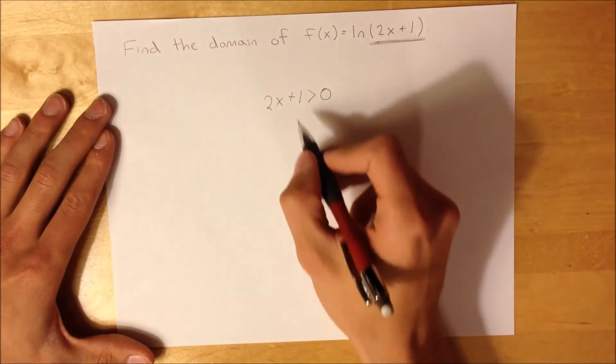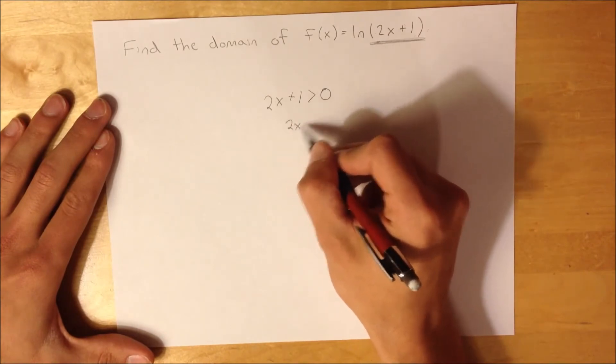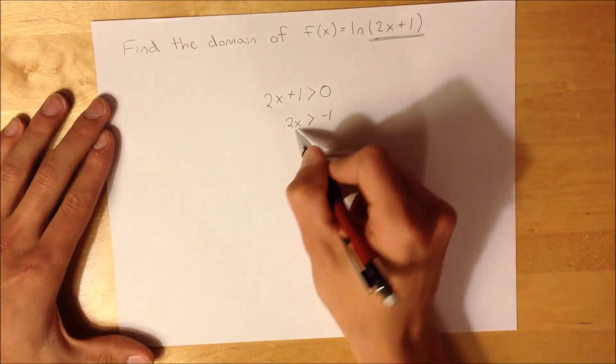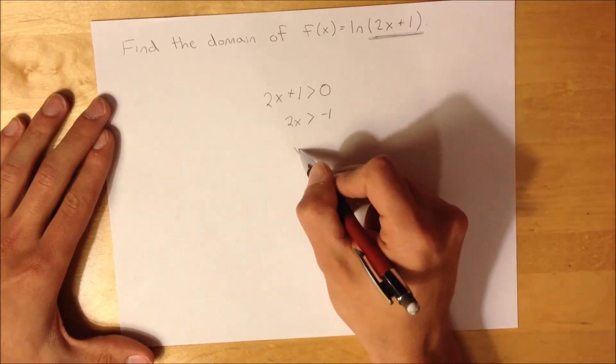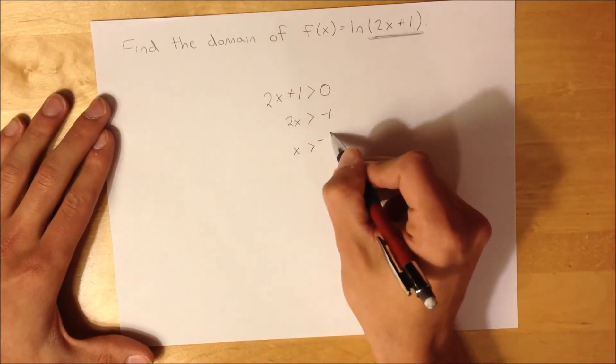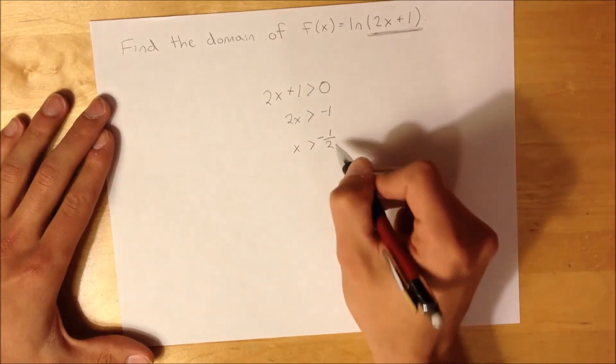So then you just solve for x, and you get 2x is greater than negative 1. Divide by 2, and you'll get x is greater than negative 1 half. That's your only restriction.